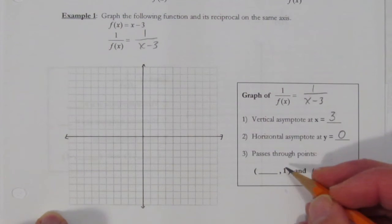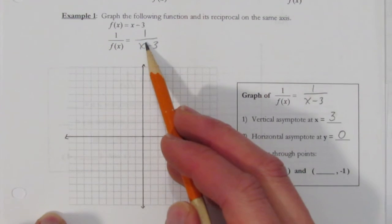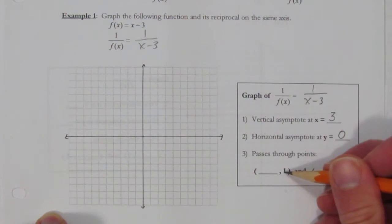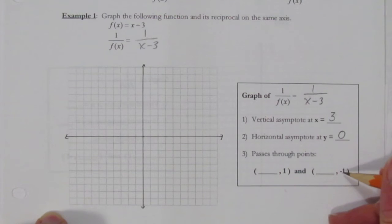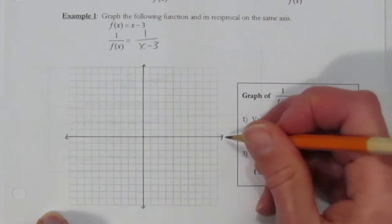The last thing we need to graph is the shared points of the original line with the reciprocal line. They share the points at y of 1 and y of negative 1. So in order to see those points, I need to graph the original f(x). Let's do that now.